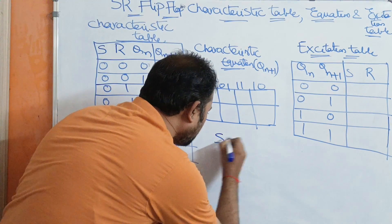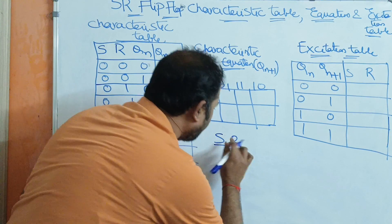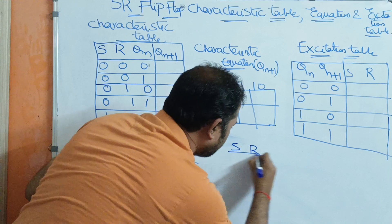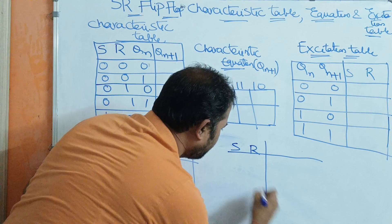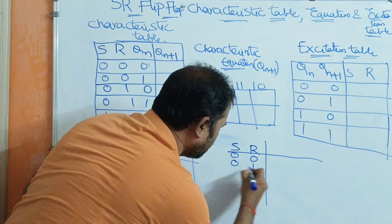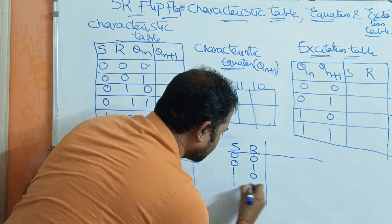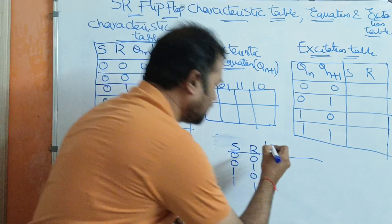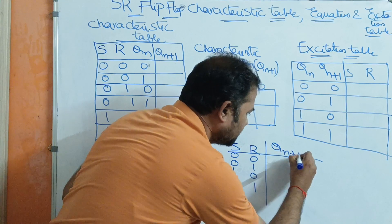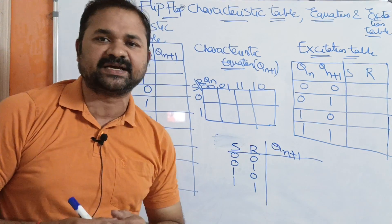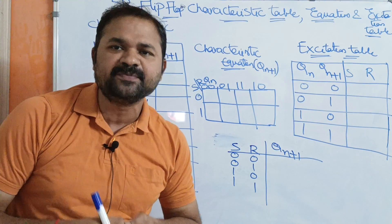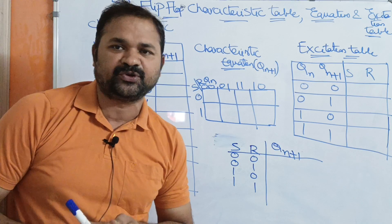Here the truth table for the SR flip-flop has two inputs, so totally four combinations: 00, 01, 10, 11. Here let output be Qn+1. Qn+1 means next state output, whereas Qn means current state output.